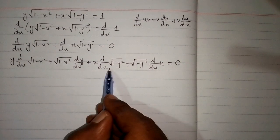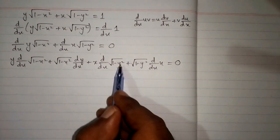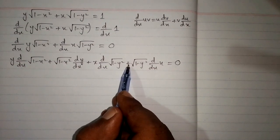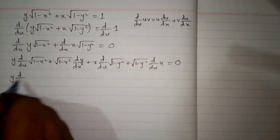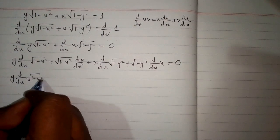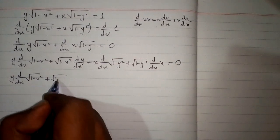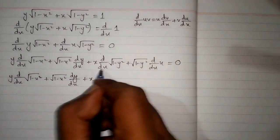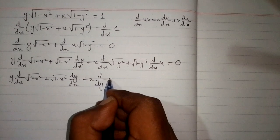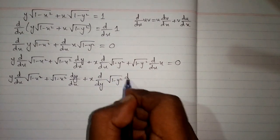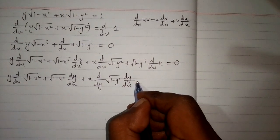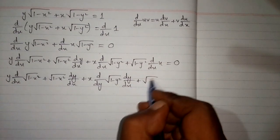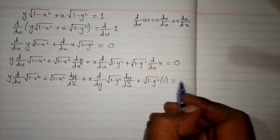Now here we cannot differentiate this expression with respect to x because the variable is y. So we will apply the chain rule and put dy, multiplying by dy/dx. We have d/dy of (1 minus y squared) times dy/dx, and the derivative of x is 1, so square root of (1 minus y squared) multiplied by 1 is equal to 0.